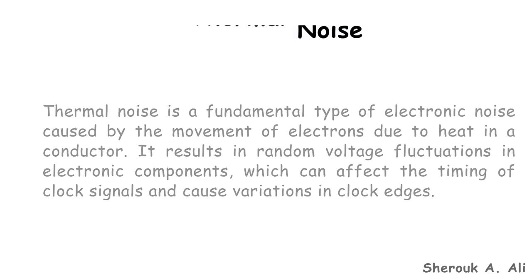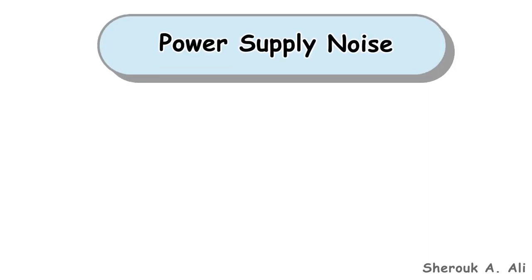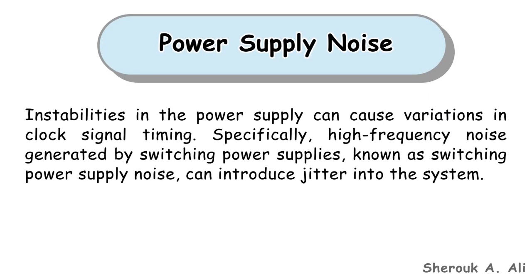Another reason is power supply noise. Instabilities in the power supply can cause variations in clock signal timing. Specifically, high-frequency noise generated by switching power supplies, known as switching power supply noise, can introduce jitter into the system.